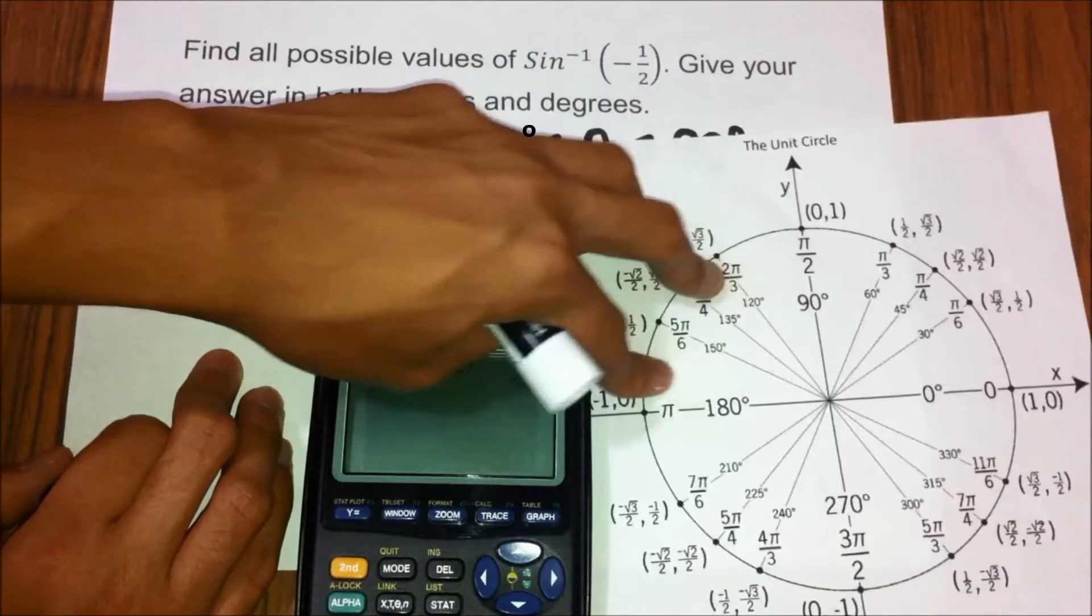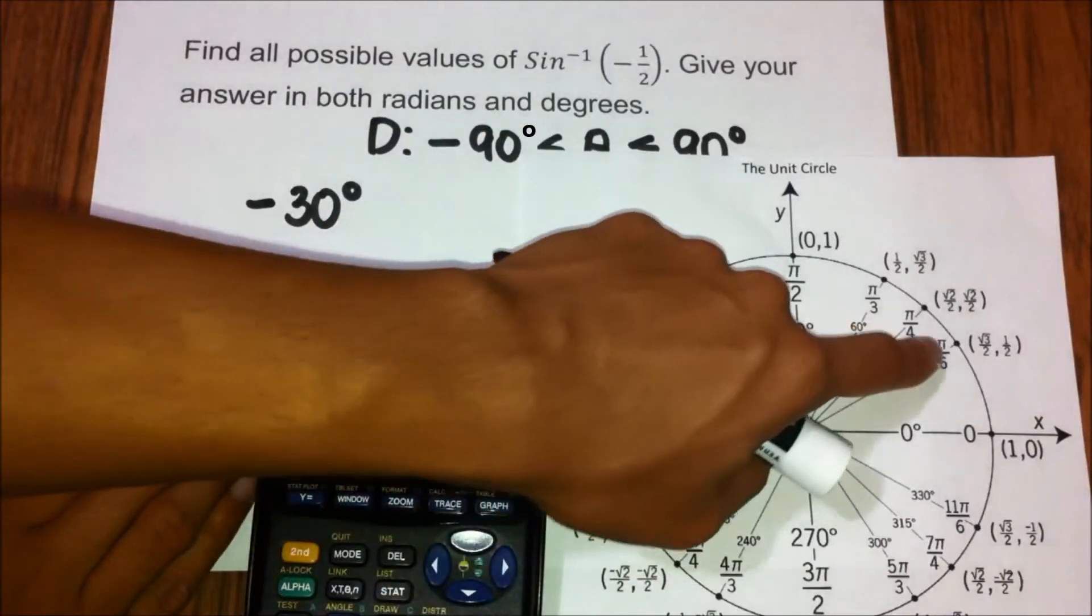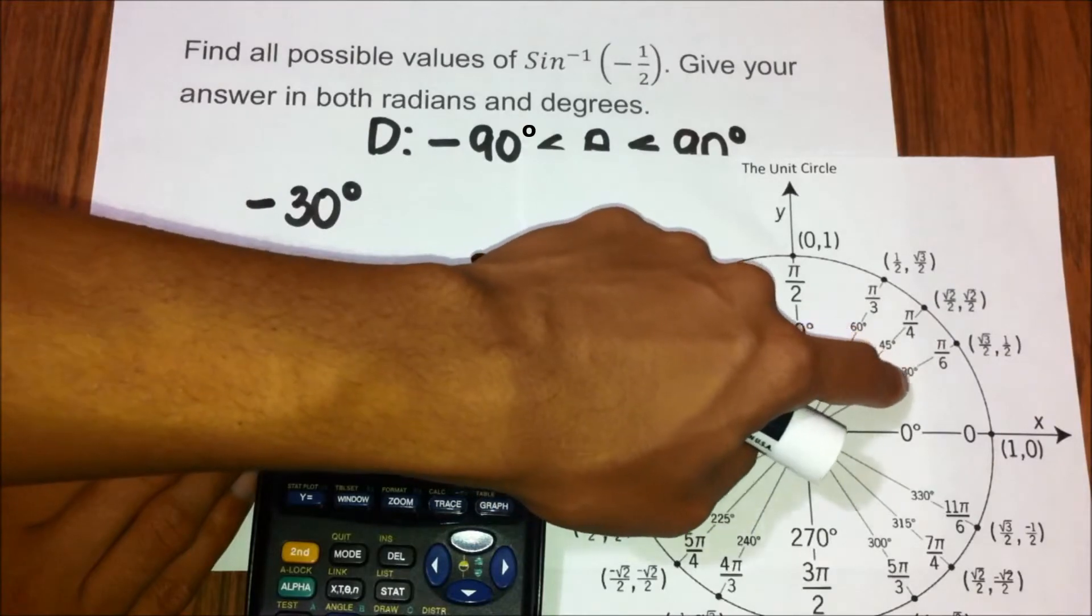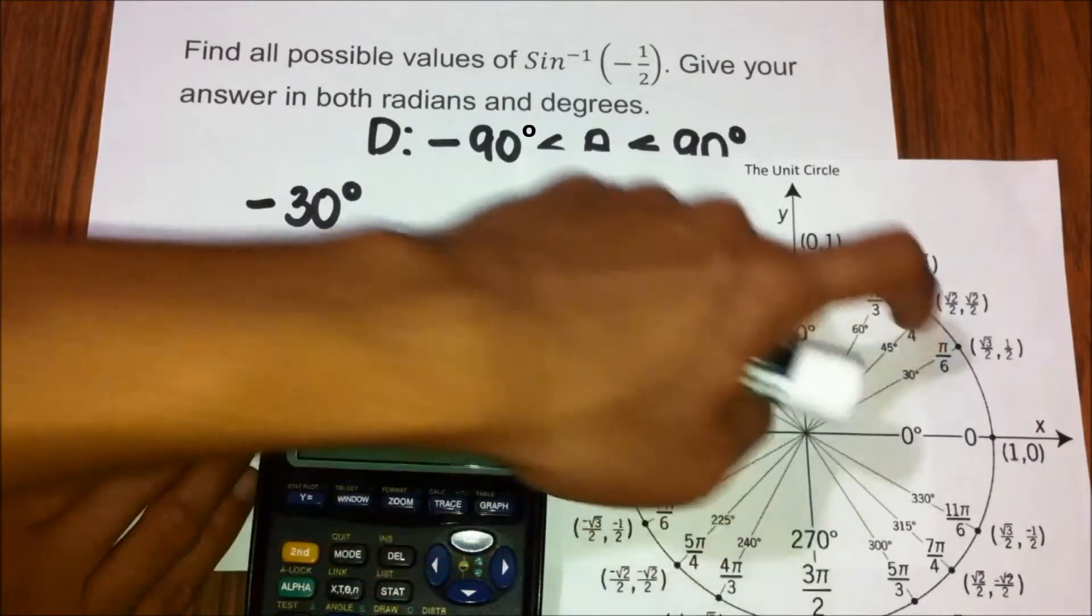which is over here, pi over 6, and its degree is 30 degrees.